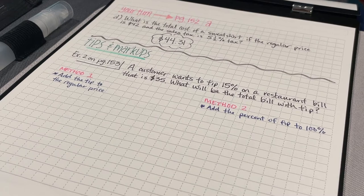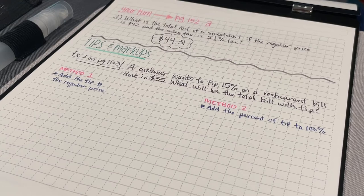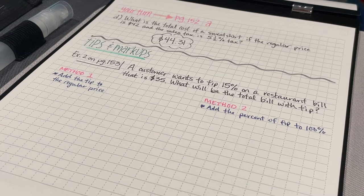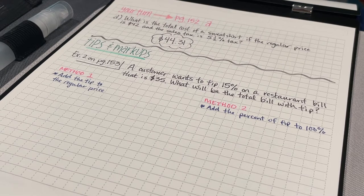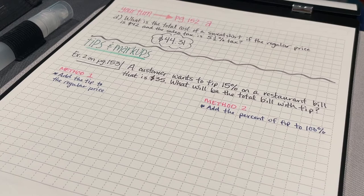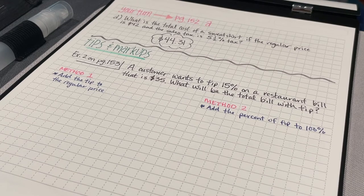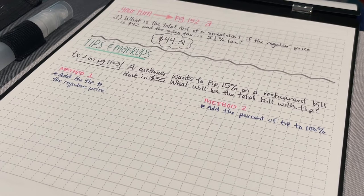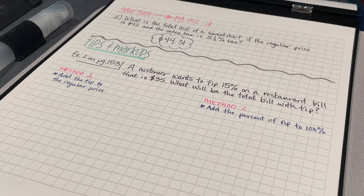Let's take a look at tips and markups. Tips and markups are going to behave in a similar way to sales tax. A tip would be something that you give to somebody, like for example, a server at a restaurant, they've done a fabulous job presenting you your dinner, the food was very good, you decide you want to give them kind of a little bit of an extra, kind of extra cash. Markups would be when a company takes something that they've purchased and they increase the price in order for them to make a profit.